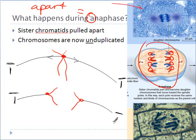Indeed, you can see in this picture of an animal cell in anaphase, it's very clear when those sister chromatids begin to pull apart.